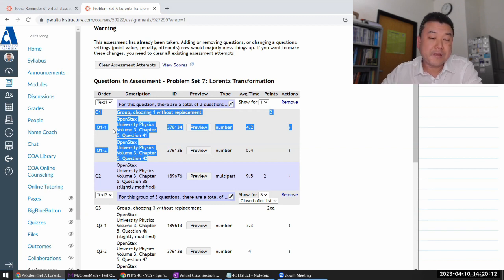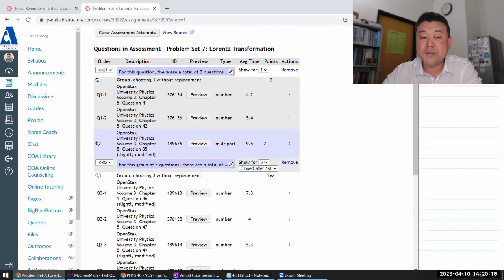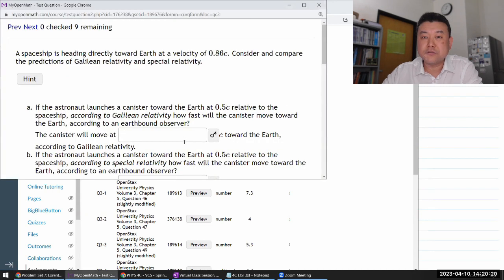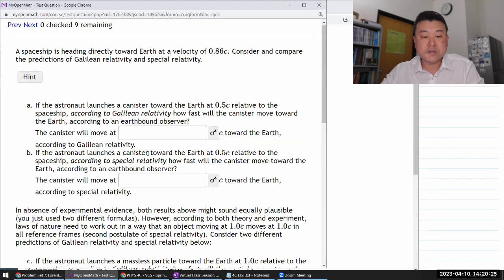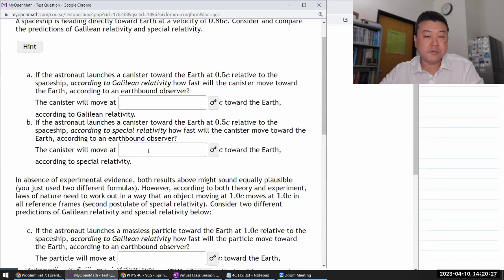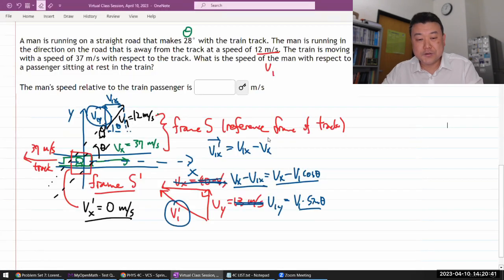And having done the non-relativistic case in this question one, my intent is that in the second question, you will see the relativistic scenario, where if you are using the same method that you used in question one, it won't work. Or, I guess, you know, it does ask you, what does Galilean relativity tell you? And that answer is not physically correct.